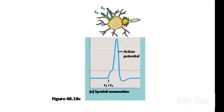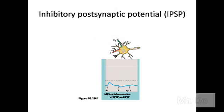Another way to create an action potential — instead of the same E sending two quick messages — it could be two different excitatory signals coming from two different axon terminals, meaning from different neurons. If they're both connected to the same dendrite and they both send a neurotransmitter at the same time, or nearly the same time in rapid succession, then it's going to be strong enough to create an action potential. This is called spatial summation — two different excitatory inputs from different neurons connected to the same dendrite.